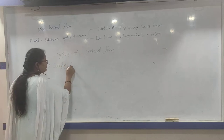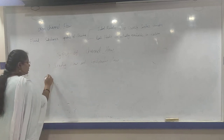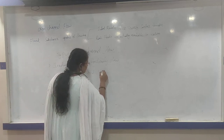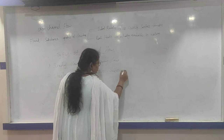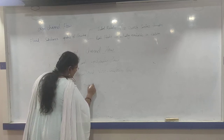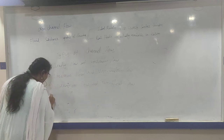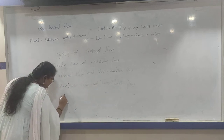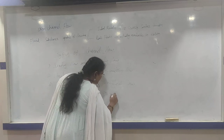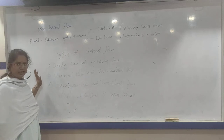The main types of channel flow are: steady flow, unsteady flow, uniform flow, non-uniform flow, laminar flow, turbulent flow, subcritical flow, supercritical flow, and critical flow. These are the different types of flows in open channels.